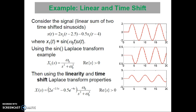Now let us see an example of linearity and time shifting property. Consider x of t equal to 2 x1 of t minus 2.5 minus 0.5 into x1 of t minus 4, where x1 of t equals sin of omega 0 t into the unit step signal. Using the Laplace transform, x1 of s equals omega 0 upon s squared plus omega 0 squared, where real of s is greater than 0. Applying linearity and time shifting, x of s equals 2 into e raised to minus 2.5s minus 1.5 into e raised to minus 4s, into omega 0 upon s squared plus omega 0 squared, where real of s is greater than 0.